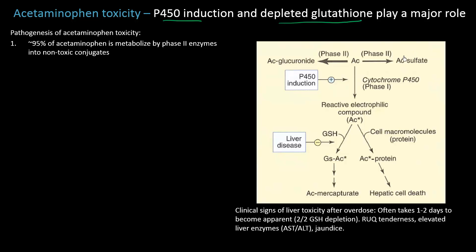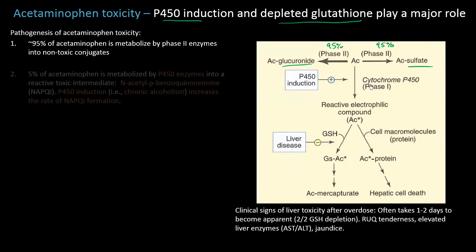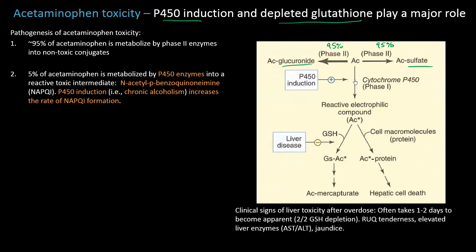The first point to understand is that by nature acetaminophen does not form toxic metabolites. About 95% of it is conjugated by Phase 2 enzymes into non-toxic forms — glucuronide or sulfate — so acetaminophen sulfate is non-toxic. But about 5% of acetaminophen is metabolized by P450 enzymes into a reactive, toxic intermediate.